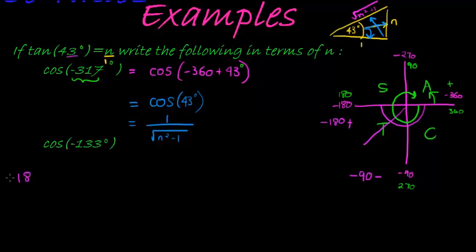So what do we get if we take negative 180 plus 43? That would give me negative 137. That does not work. We need 133. So how about negative 90 minus 43? That seems to be working. That is indeed negative 133.